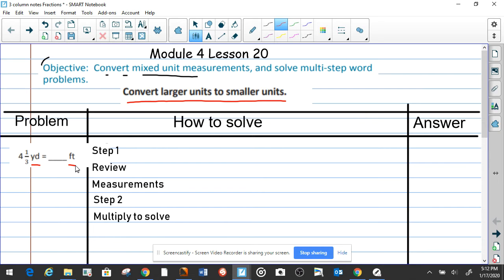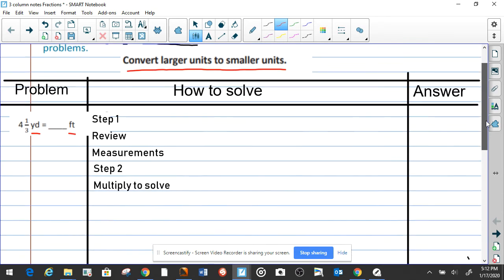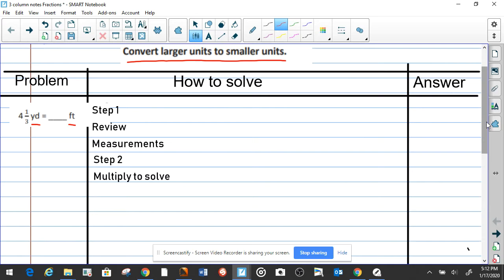Now let's do a review and look at what is one yard in feet. One yard equals three feet. Okay, now we can set up our multiplication.